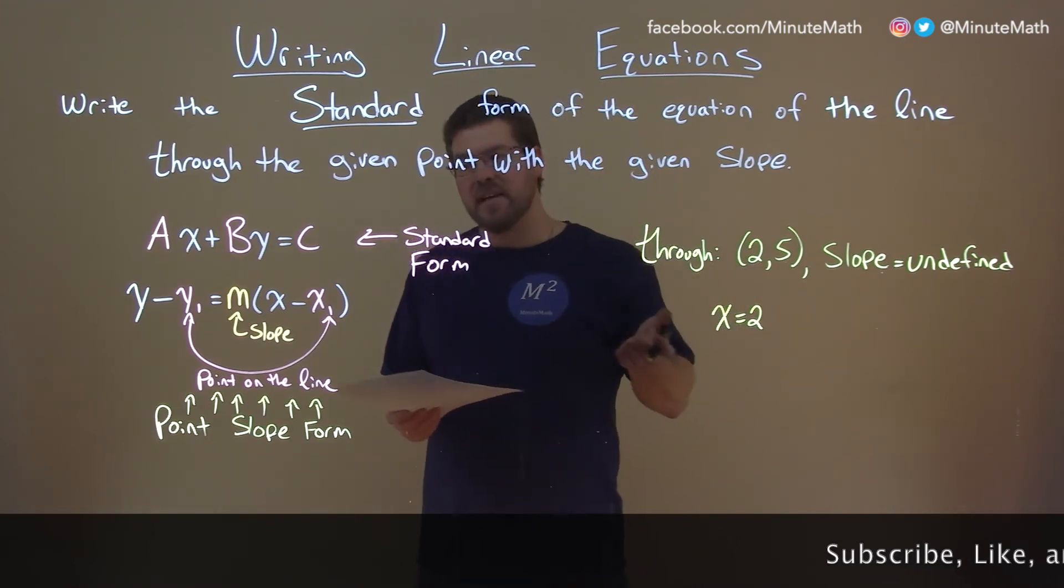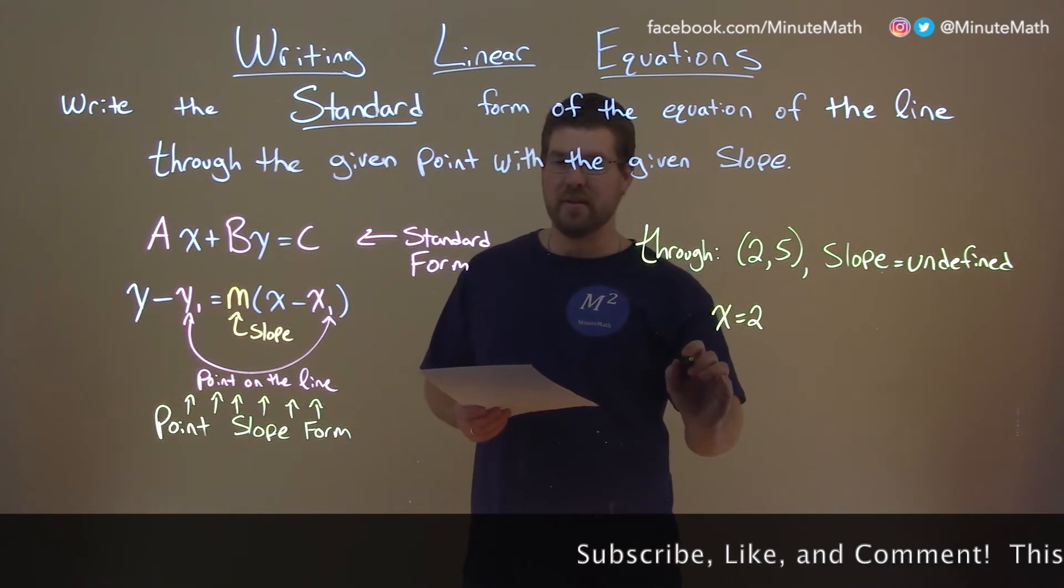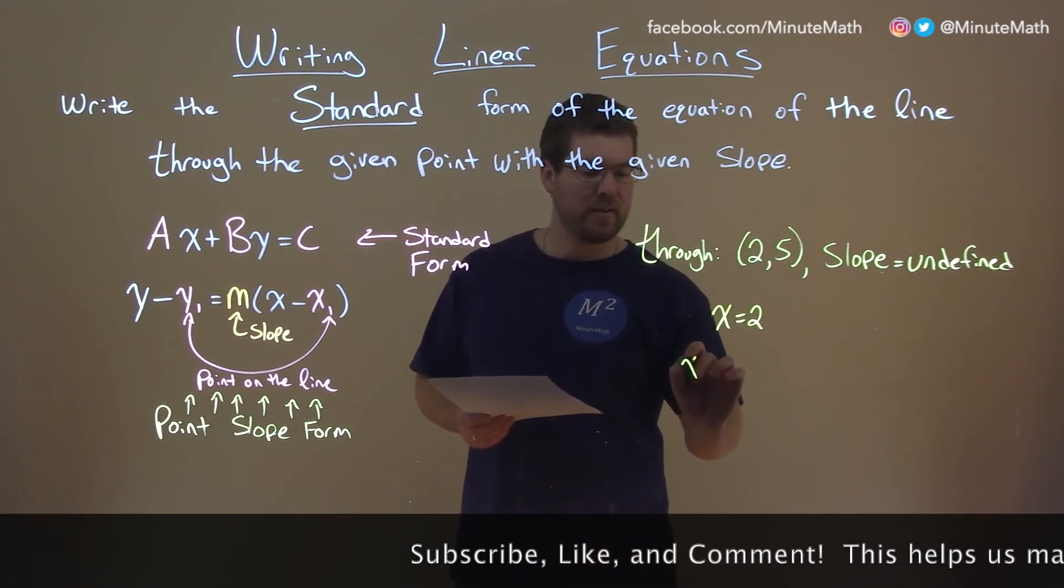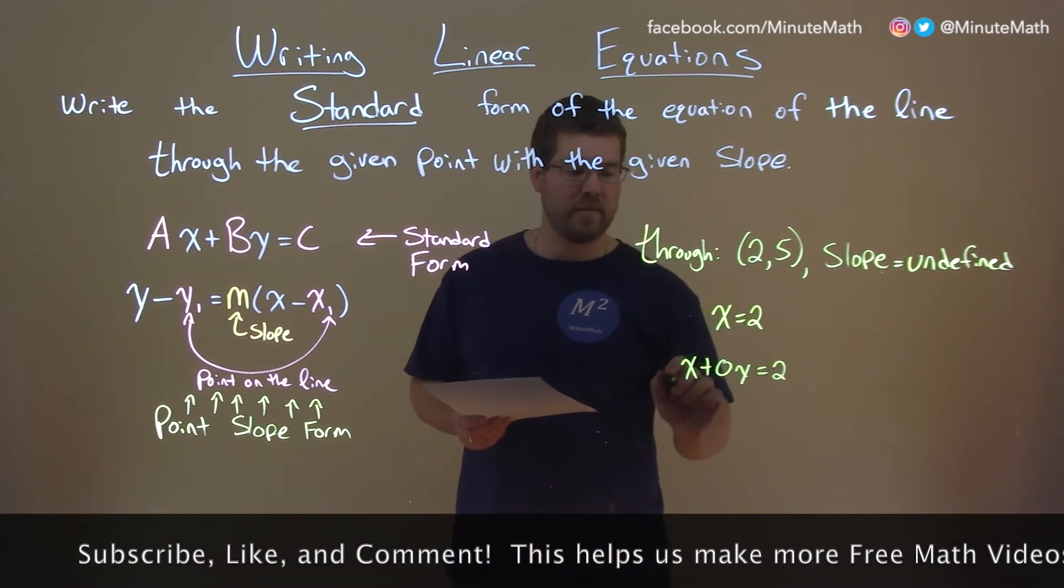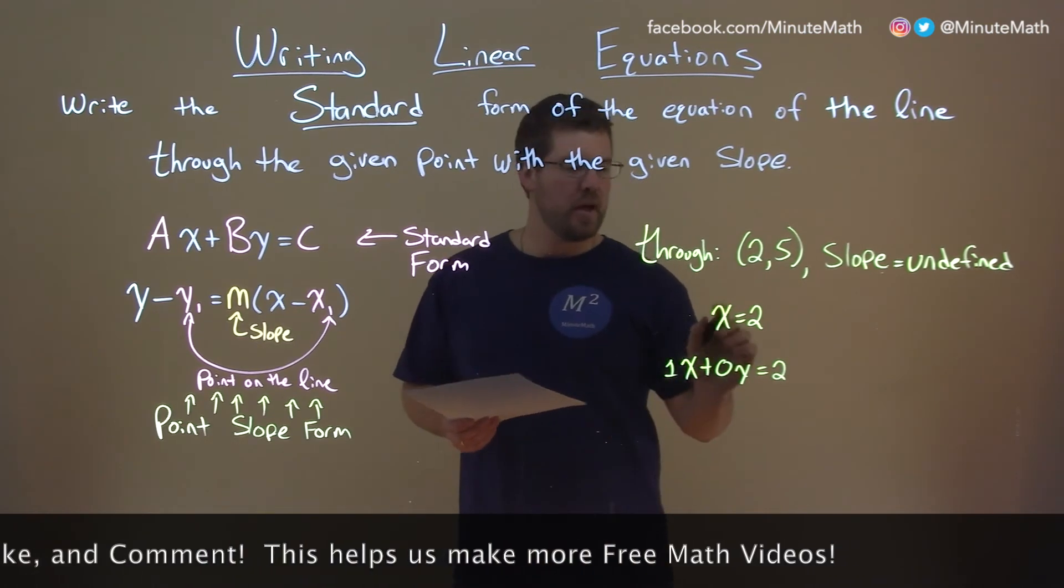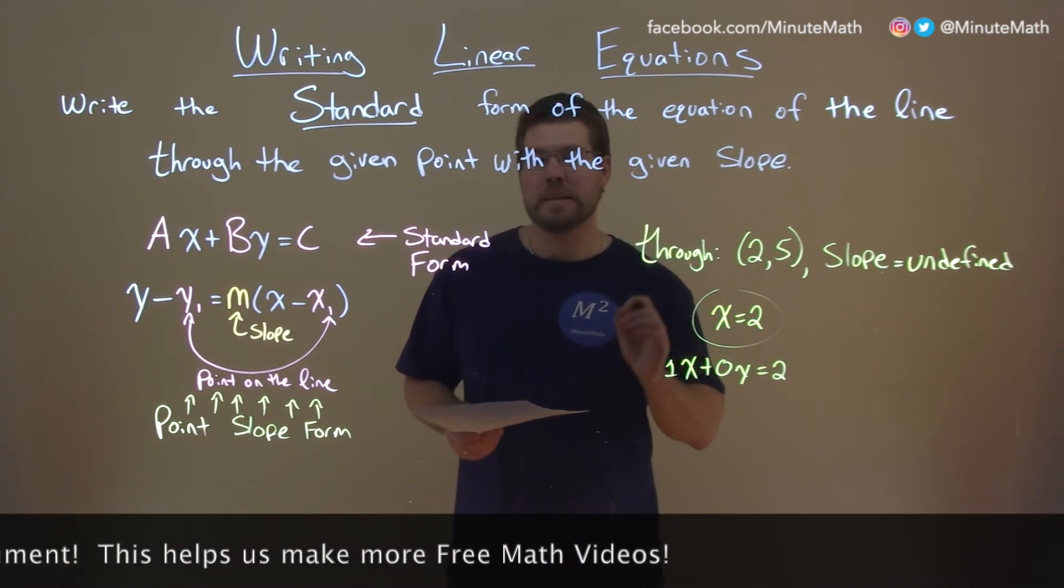And it's kind of in standard form, right? If you really want to write it out, you can see it like this: we have x plus 0y equals 2, if you want to write it like that, and there's a 1 here. But in reality, x equals 2 suffices.